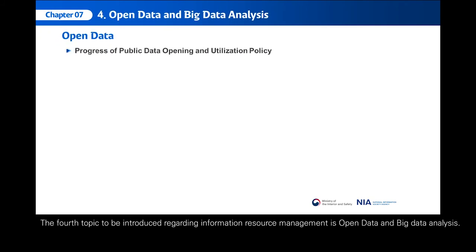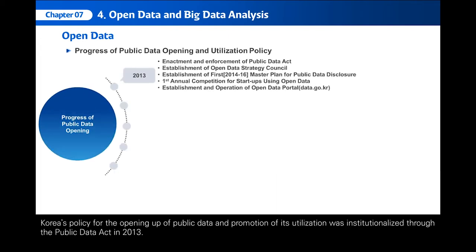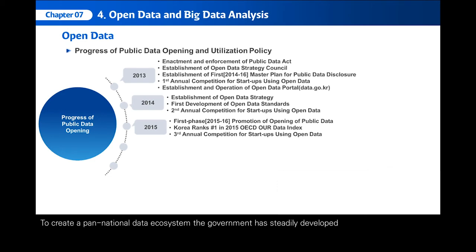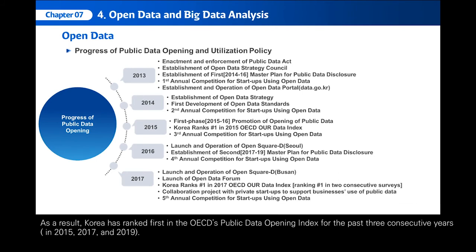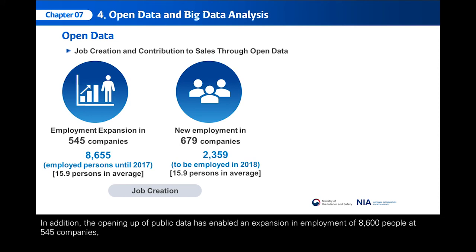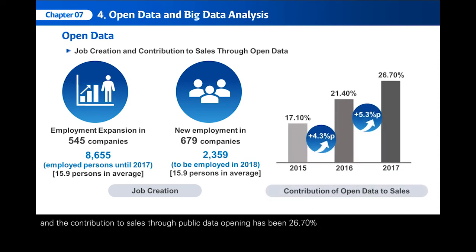The fourth topic to be introduced regarding information resource management is open data and big data analysis. Korea's policy for the opening up of public data and promotion of its utilization was institutionalized through the Public Data Act in 2013. To create a pan-national data ecosystem, the government steadily developed basic plans and corresponding policies over six years — 2014 to 2019 — in two three-year plans. As a result, Korea ranked first in the OECD's Public Data Opening Index for three consecutive years: 2015, 2017, and 2019. The opening up of public data enabled an expansion in employment of 8,600 people at 545 companies, and the contribution to sales through public data opening has been 26.7%.